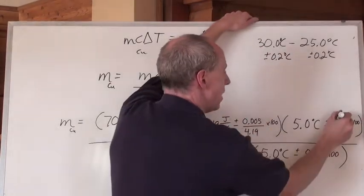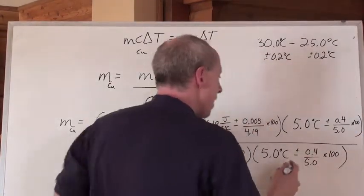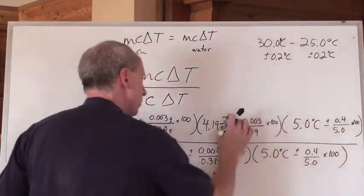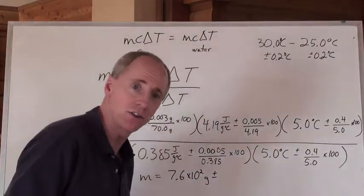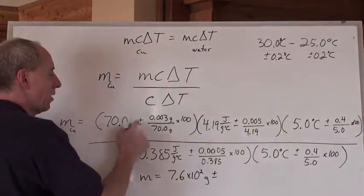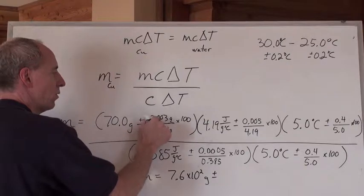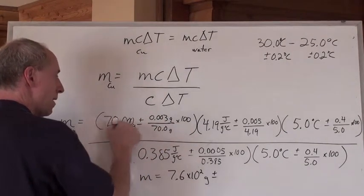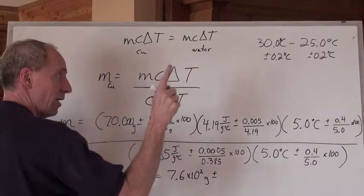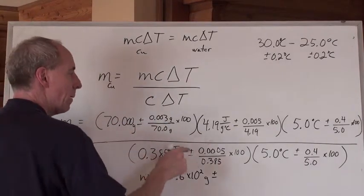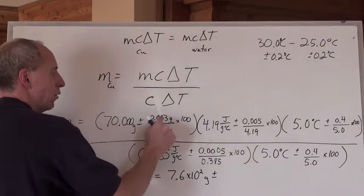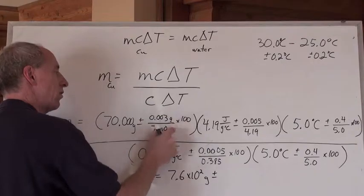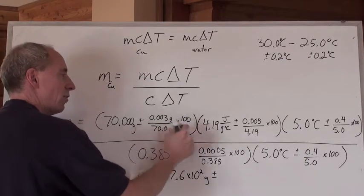When you put all of those in, you need to take those numbers and then you need to turn every number here into its percent uncertainty. Look what I've done, by the way, I've taken a mass and I've said it was plus or minus 0.003, so that means actually that this mass should have been recorded to this many numbers after the decimal. So that right there is the uncertainty, 0.003 absolute uncertainty divided by that 70 times 100 turns it into a percent.